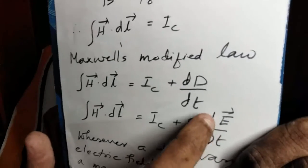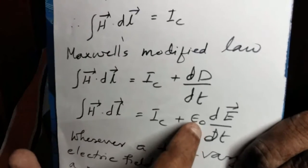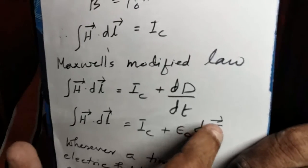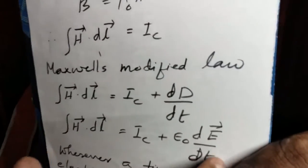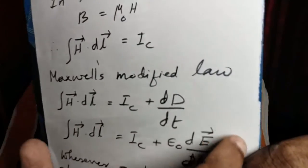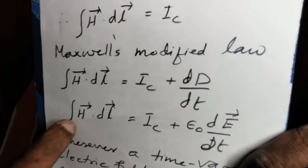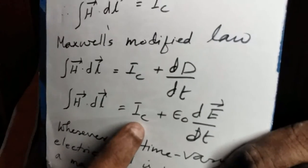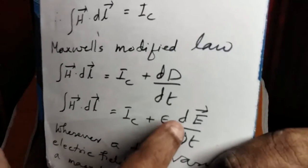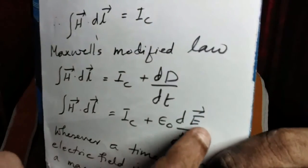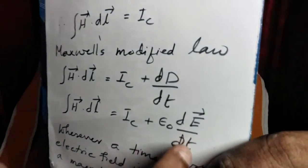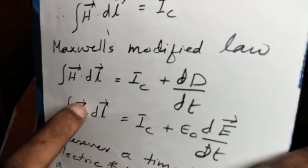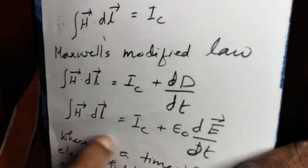The displacement current I displacement is dD by dt. Since D equals epsilon zero times E in free space, taking epsilon zero outside the differential gives epsilon zero times dE by dt. So the modified Ampere's law is: integral of H dot dL equals IC plus epsilon zero times dE by dt, where E is the intensity of the electric field. If the field is static, dE by dt becomes zero and the equation reduces to the original form of Ampere's circuit law.